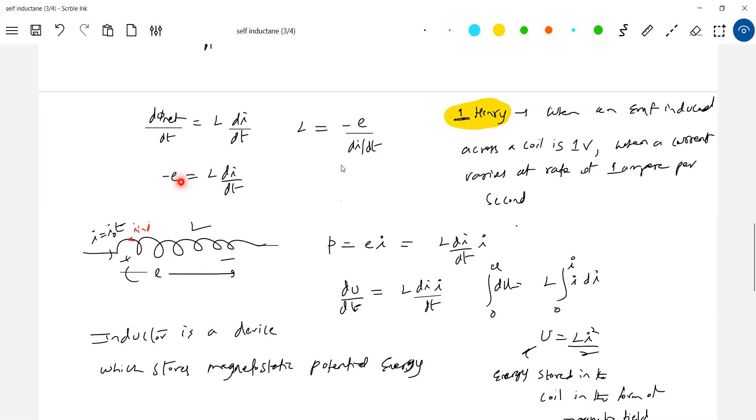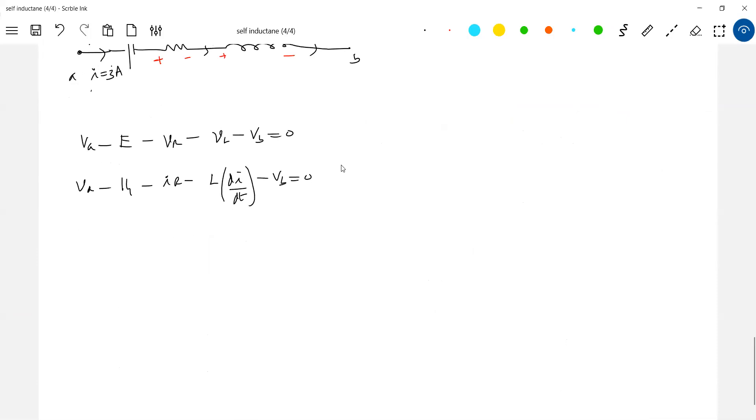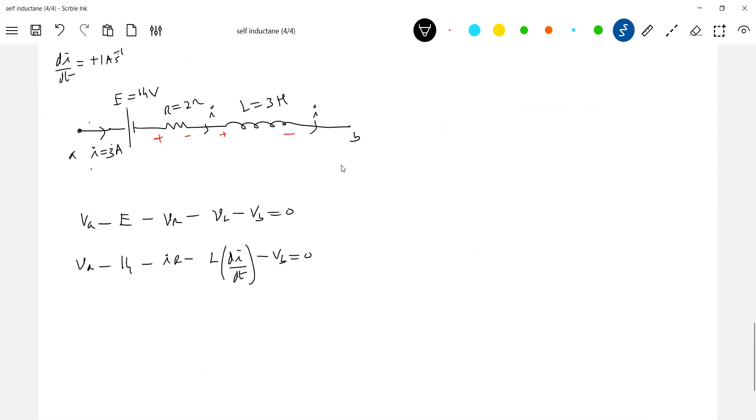This EMF induced is different, potential difference is different. Now what we are writing here is the potential drop across inductor, which is equal to L Di by dt. I'm going to substitute Di by dt with sign. Is current increasing or decreasing? It is increasing with time. You can see Di by dt plus one ampere per second.